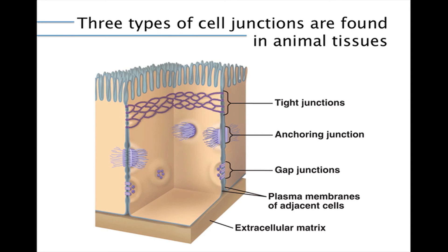Three types of cell junctions are found in animal tissues. At tight junctions, the membranes of neighboring cells are very tightly pressed against each other, knit together by proteins, preventing leakage of extracellular fluid across a layer of epithelial cells. Anchoring junctions function like rivets, fastening cells together into strong sheets, and are common in tissues subject to stretching or mechanical stress, such as skin and heart muscle. Gap junctions are channels that allow small molecules to flow through protein-lined pores between neighboring cells.